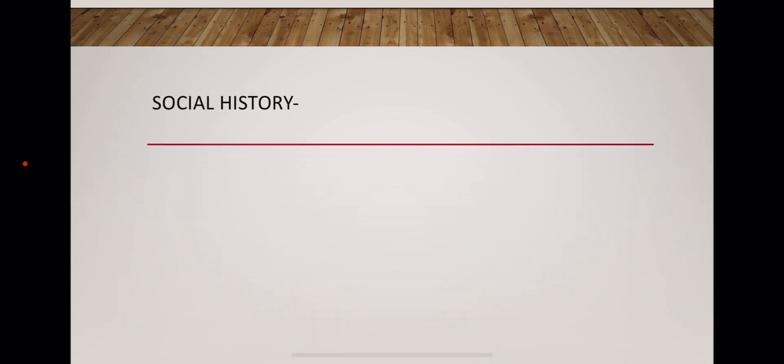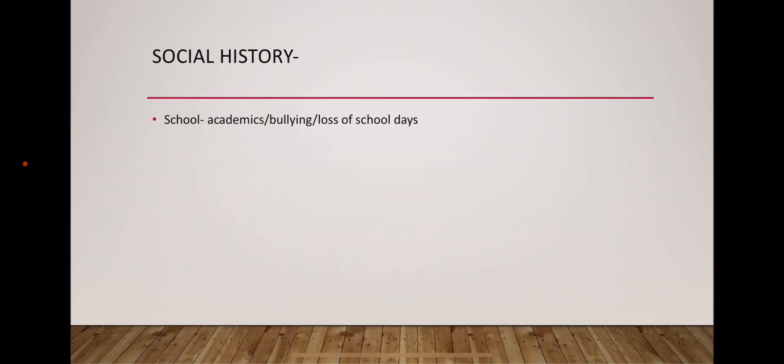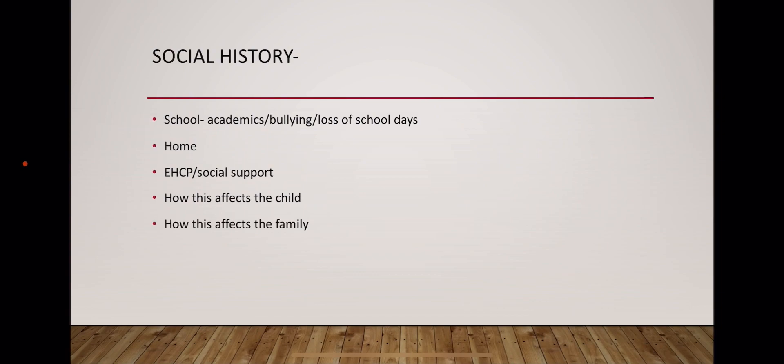Social history is very important. Ask about academics — how is school going, is there any history of bullying, are there any days of school missed, and who is looking after the child at school. Ask how the home conditions are, whether there is any education health care plan or social support provided to this patient, how the asthma symptoms are affecting the child's life, and how this problem is affecting the family.